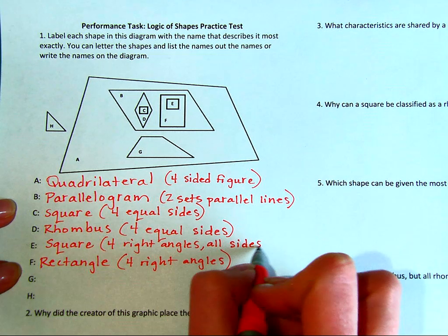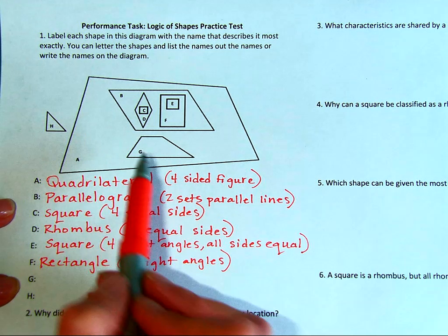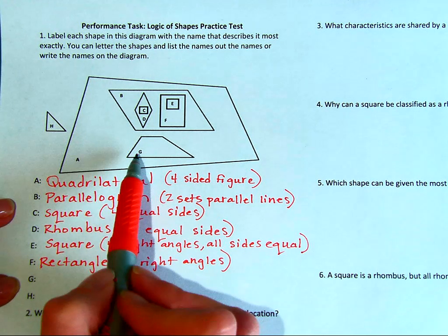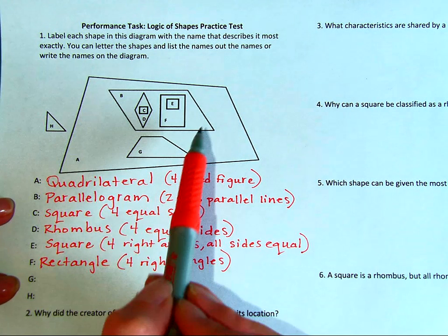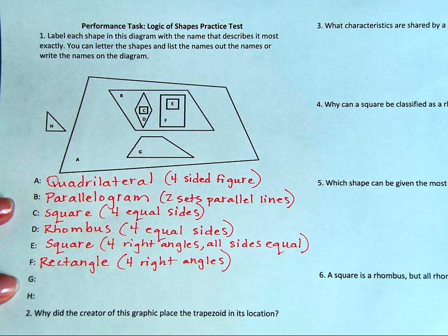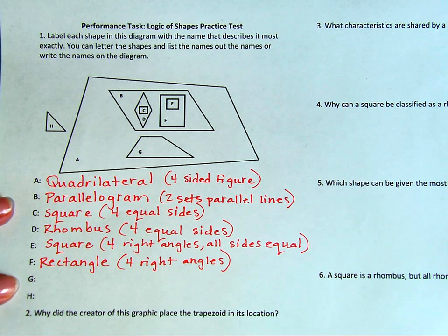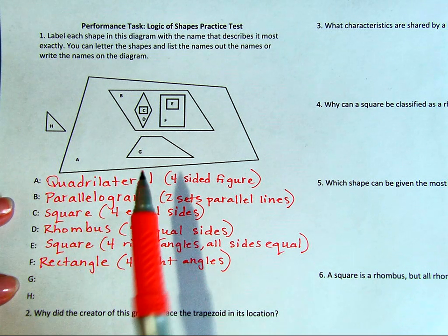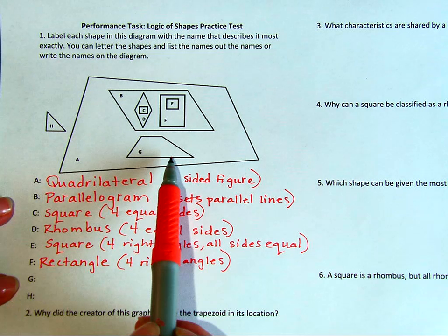Figure G — I notice it's not inside of figure B, which is a parallelogram. That's because figure B houses all of the shapes that are parallelograms. Figure G only has one set of parallel lines, so that describes a trapezoid.